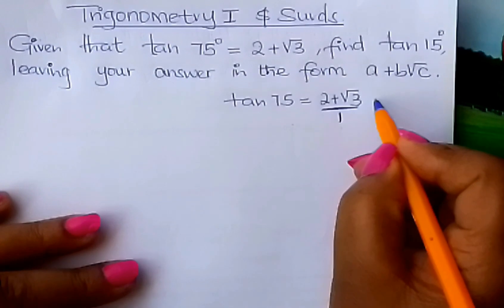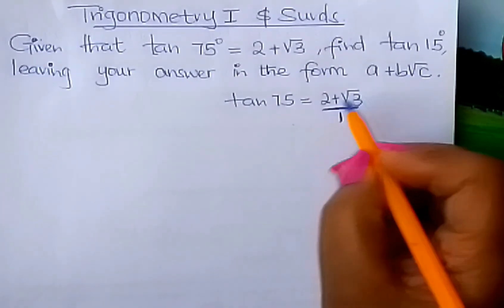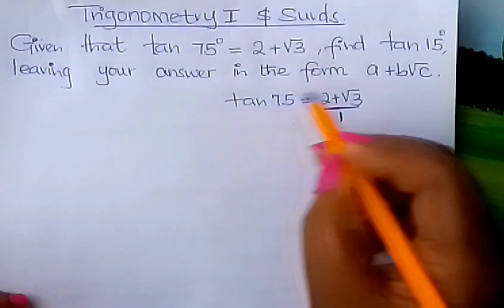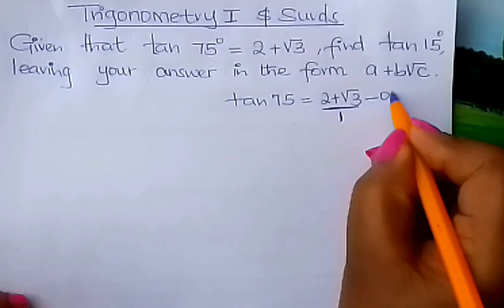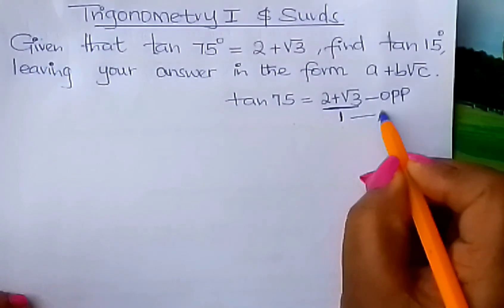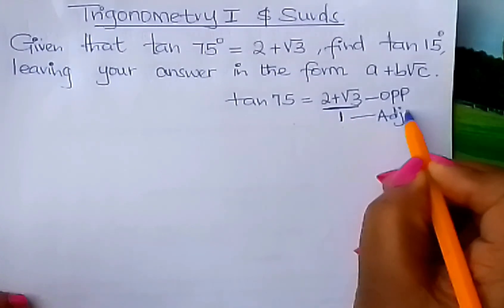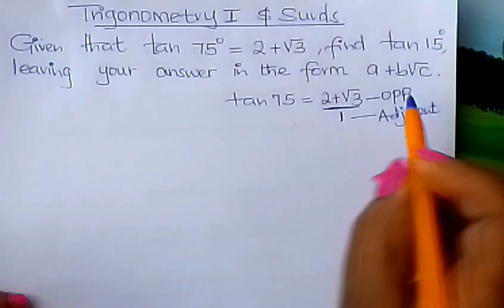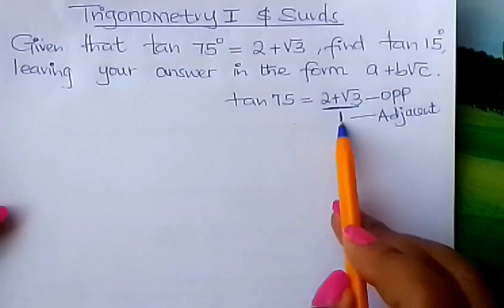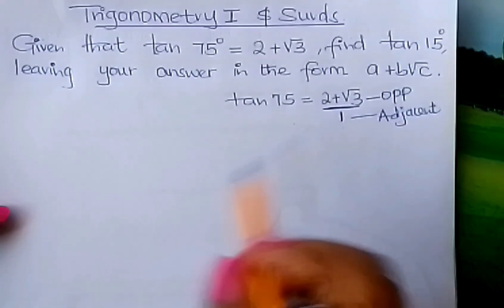This is form 2 work. Tan of an angle is equal to opposite over adjacent. Tan θ is equal to opposite over adjacent, so this is opposite, and this is adjacent.